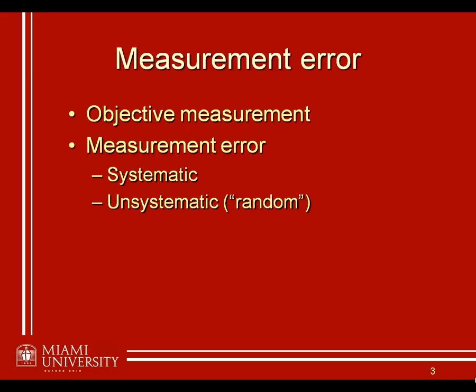Measurement error can be broken down into two different types: systematic versus unsystematic or random error. What we really hope is that we don't have any sort of systematic measurement error when we're recording our measurements, and that's what reliability and validity are really all about. If we're measuring something but we're systematically off, these are the types of errors that we are likely to have some sort of control over. Unsystematic or random error consists of forces that are beyond our control — there's always going to be some variability we can't minimize or eliminate. But systematic mistakes are things we can be aware of and hopefully reduce.